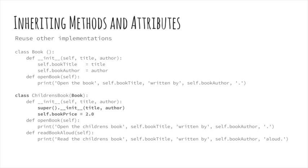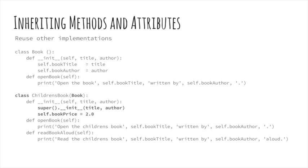It is possible for a class in Python to inherit from more than one class — this is called multiple inheritance. I've modified the children's book class to not only refer to the parent class Book, but also to feed in all the methods and attributes that belong to a hypothetical inventory system. For right now it's written as just a placeholder, but I foresee a whole bunch of code that I'll be able to pull in and reuse.